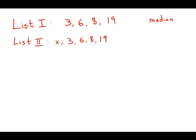So list 1 is already put in numerical order, but there are only 4 numbers on the list, so there's no number right exactly in the middle. What we do in this case when we have two numbers that are in the middle, when there's an even number of entries on the list, what we have to do is average the two middle numbers.